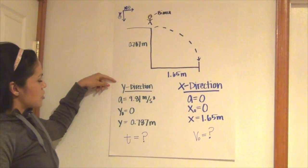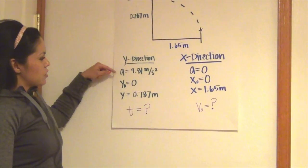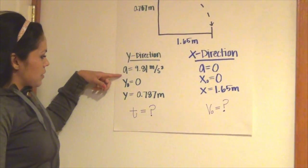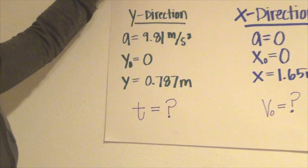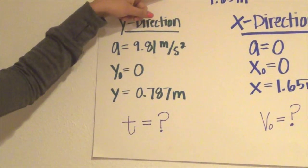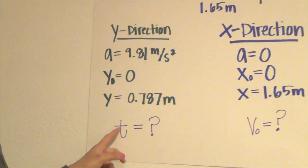In our y direction, the components are: acceleration equals 9.81 meters per second squared, y naught is 0, y equals 0.787 meters, and we're going to solve for t because we want to find the time.